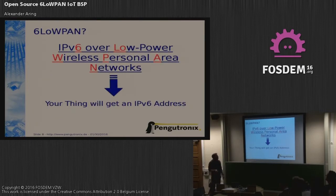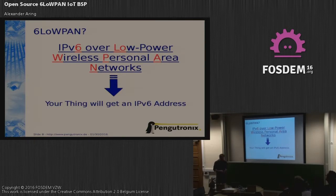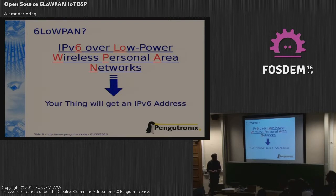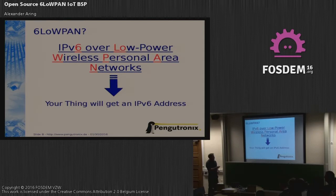6LoWPAN, if nobody has heard about it, is IPv6 over Low-power Wireless Personal Area Networks. A low-power wireless personal area network is something like 802.15.4 or Bluetooth Low Energy. It's also used by some small IoT operating systems like Contiki or RIOT OS, which run on small microcontrollers — meaning a sensor connected by some microcontroller with Contiki or RIOT OS can get an IPv6 address and be accessible from any IPv6 connection.